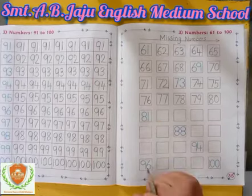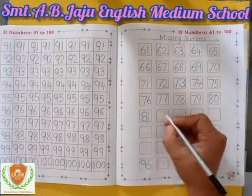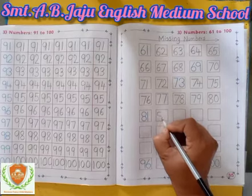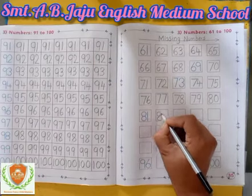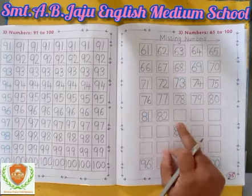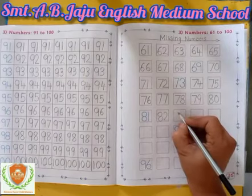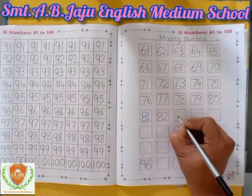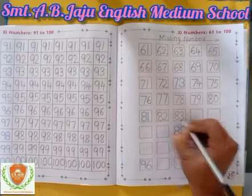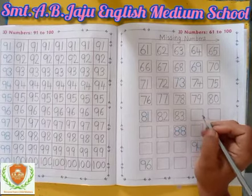After 81, which number will become? 82. First write down 8, then write down 2. 82. After 82, write down 8 then 3 — 83.